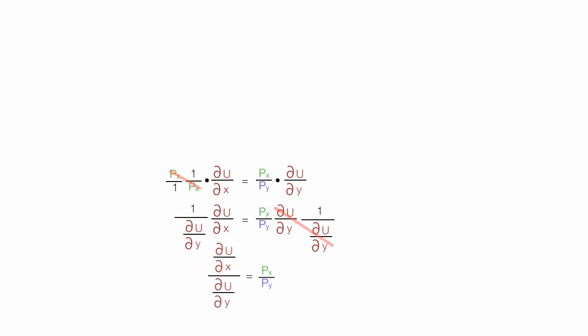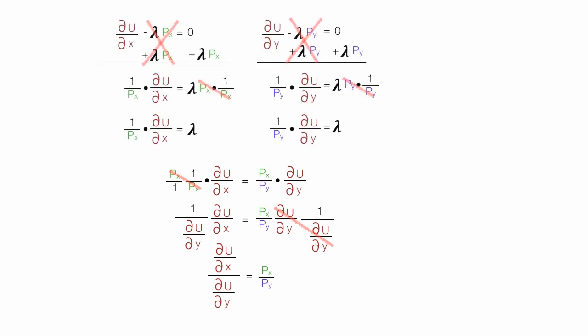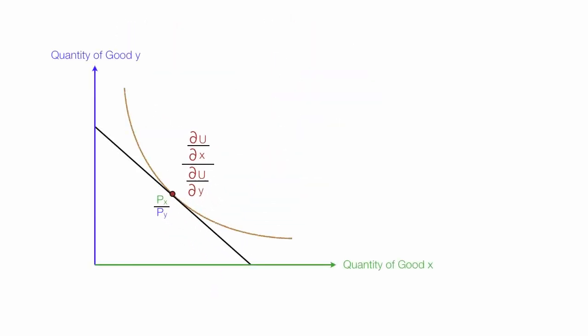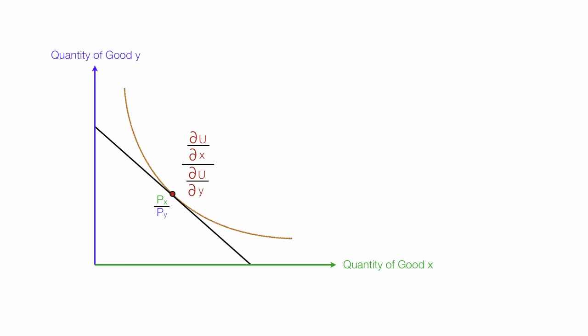Here are all the steps put back together — that looks a bit complex, but hopefully you can follow along. It turns out that a consumer will maximize utility where these two slopes are equal: the slope of the budget line and the slope of the indifference curve. You'll often see it written as the ratio of the two marginal utilities equal to the ratio of the prices.